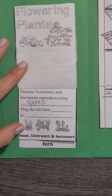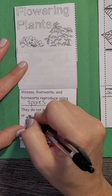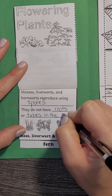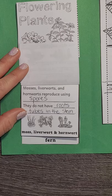Moss, liverwort, and hornwort are different from most plants because they do not have roots to anchor them. Because they're so low and small to the ground, they also do not have tubes in the stem. Water does not get transported that way — it just moves around as needed because the plant is so small and low to the ground.